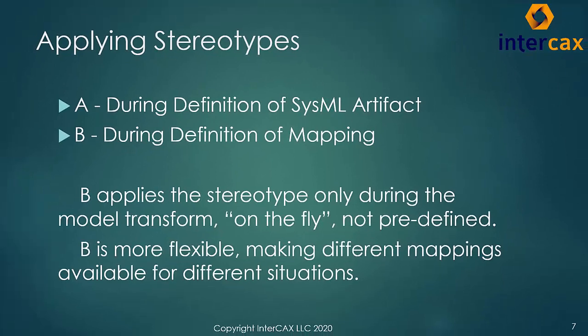When a stereotype is specified as part of a mapping, it is only applied to the SysML element when the model transform actually takes place — when the Jira issue is pushed to create a block in SysML, or when the block is pushed to Jira to become a new issue. In this sense, it is applied on the fly as needed and does not require that the SysML modelers use that stereotype in their modeling beforehand. It is more flexible and allows multiple stereotypes to be applied to the same element in different mappings.